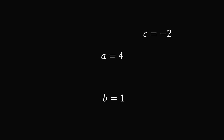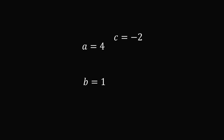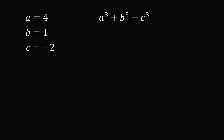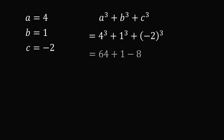But there's one more step. We need to evaluate a cubed plus b cubed plus c cubed. We substitute in and carefully simplify to get that the sum of the 3 cubes is equal to 57. And that's the answer.